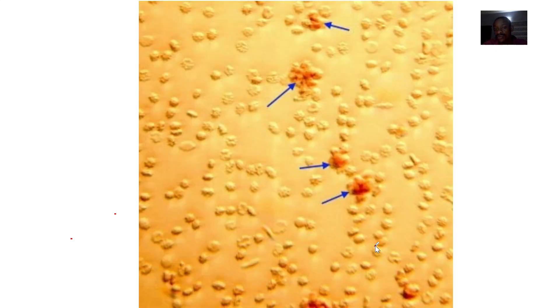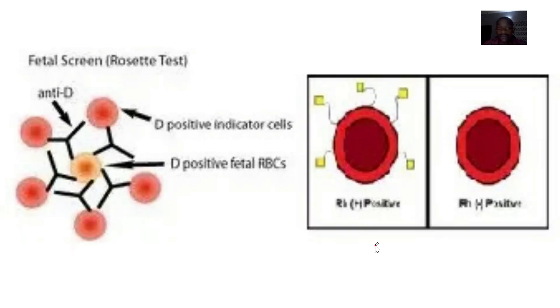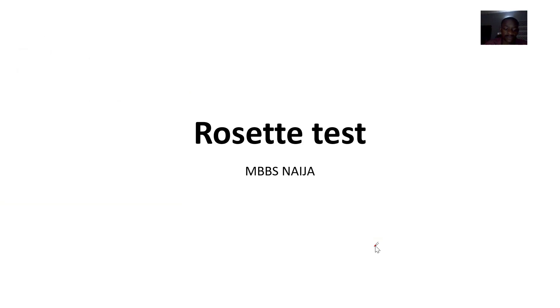Here you can see how it should look under the microscope. You can see a lot of patterns around the cells — those are the rosette patterns.